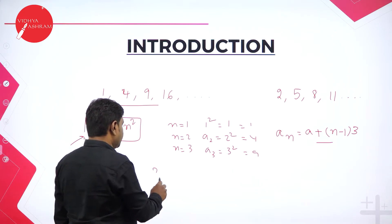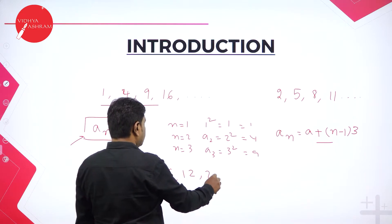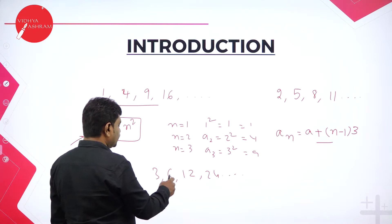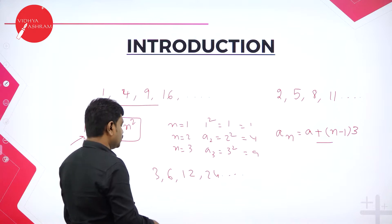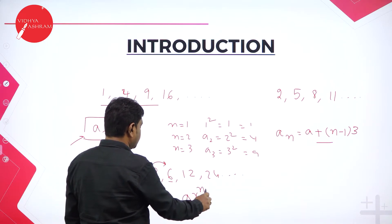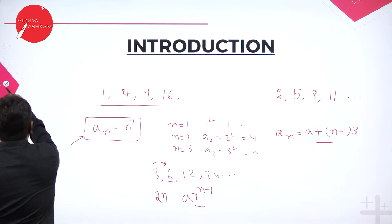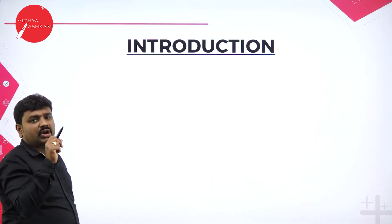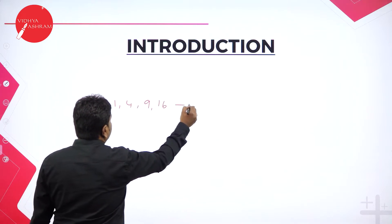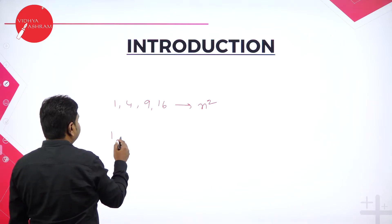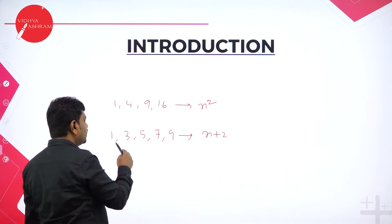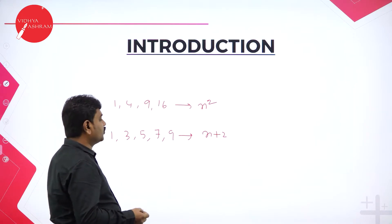Sometimes a sequence like 3, 6, 12, 24 follows a rule where every number gets multiplied by 2 — the multiple of 2. So 3×2 = 6, 6×2 = 12, 12×2 = 24. We write this as a·r^(n−1) where r is the common ratio. Sequences like 1, 4, 9, 16 obey n², and sequences like 3, 5, 7, 9 obey 2n+1.